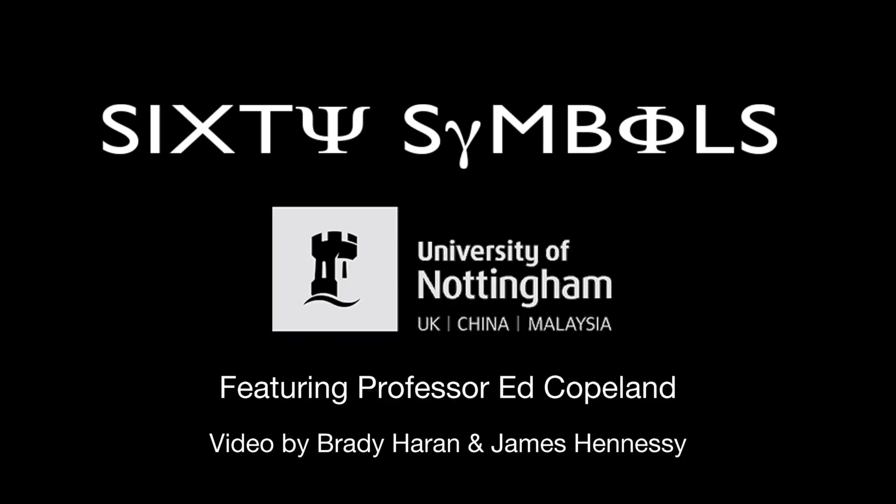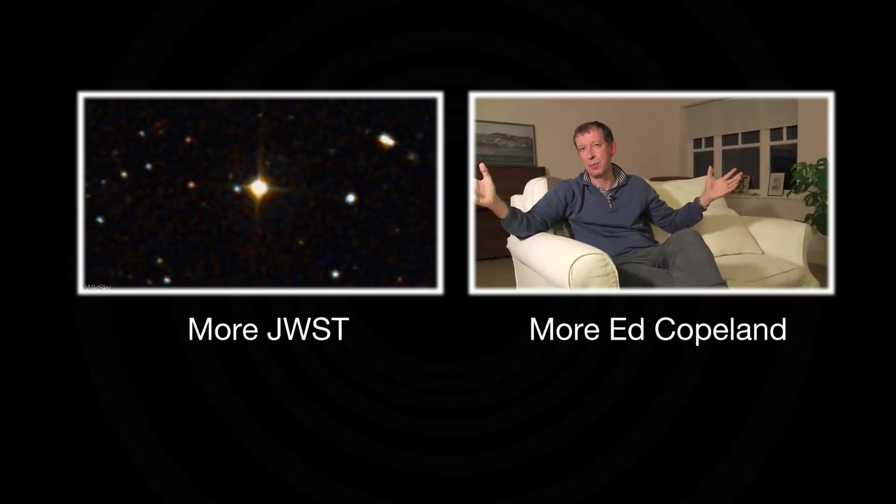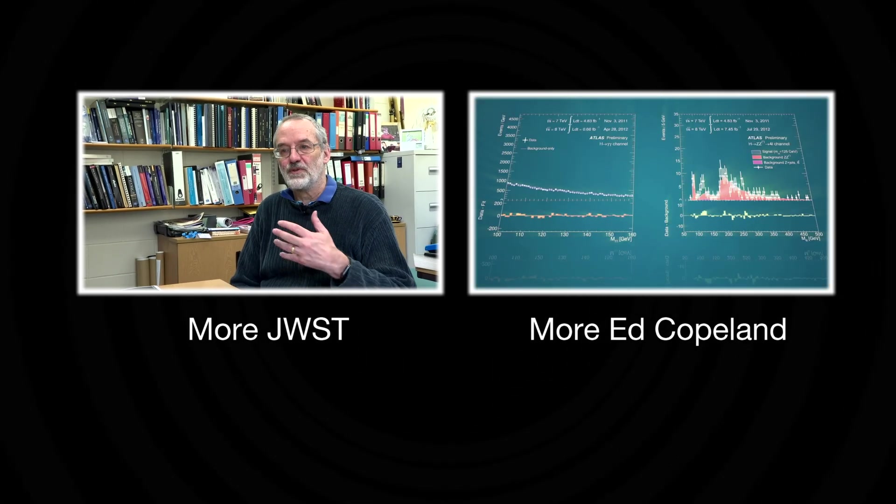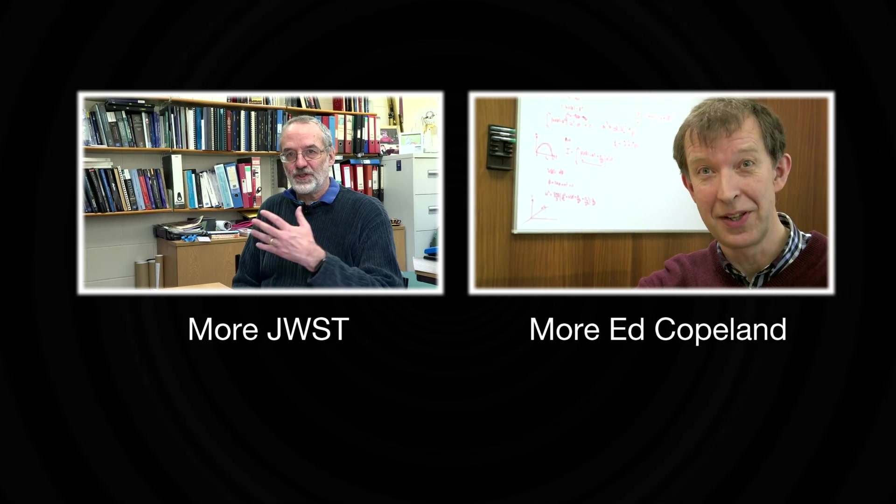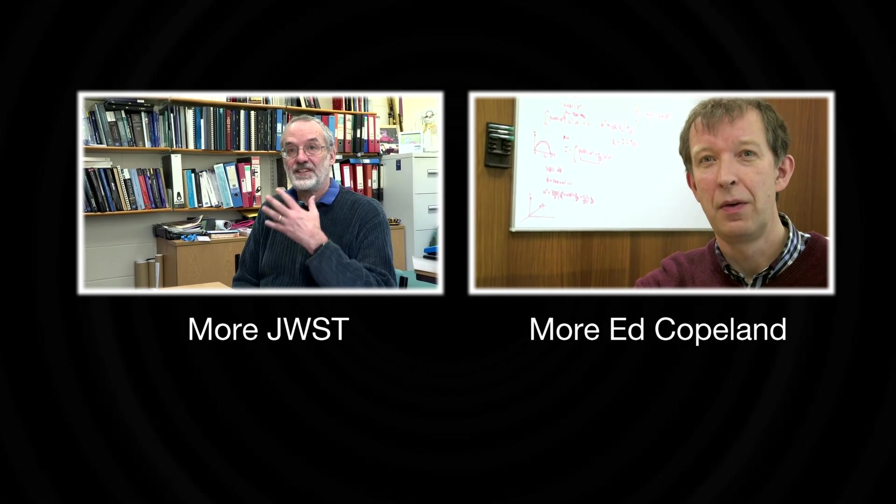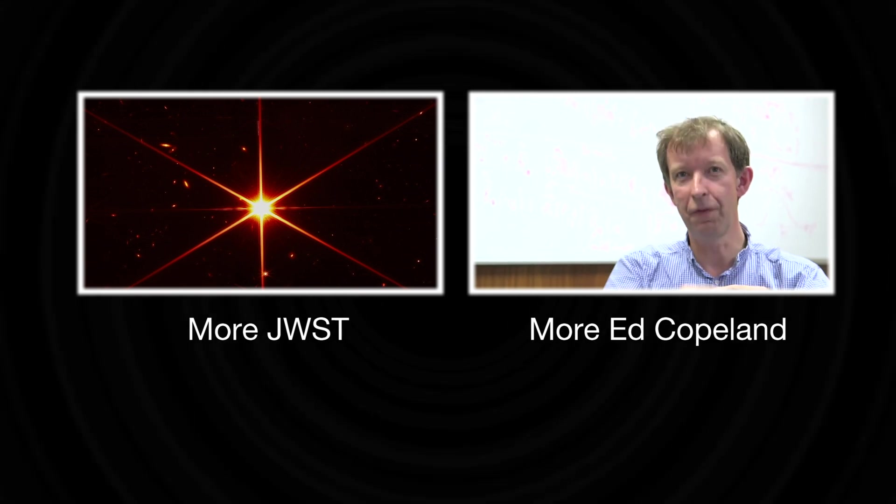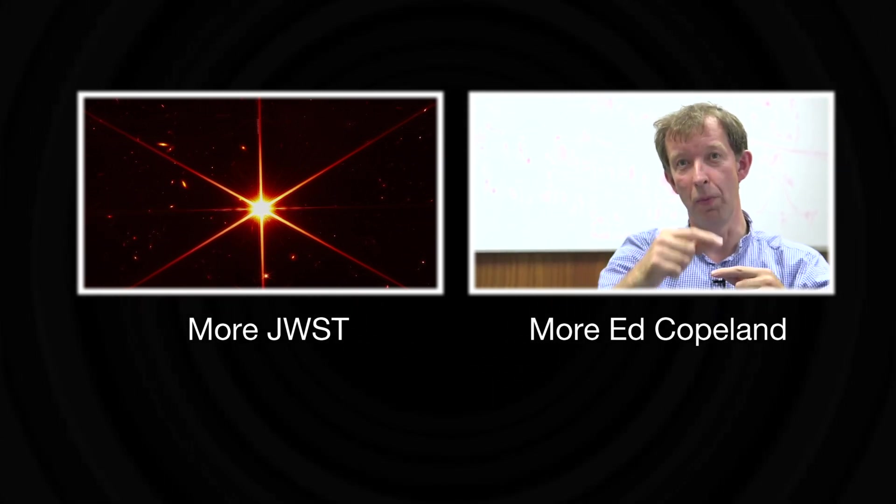It's a remarkably nondescript star. I suspect it was chosen probably because it's fairly boring, right? It's not, you know, it's not so bright that it would sort of blind the telescope. It's not so faint that they wouldn't actually be able to use it to focus the telescope with. It's got no companions, so you can get a nice sharp image of an individual star. Has it got a cool name?